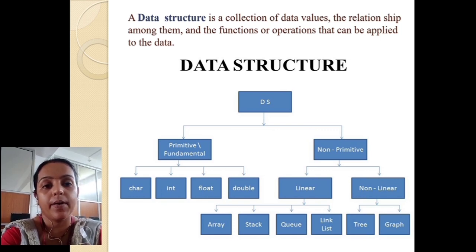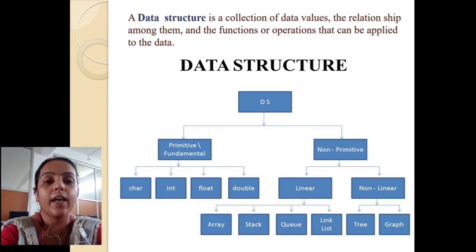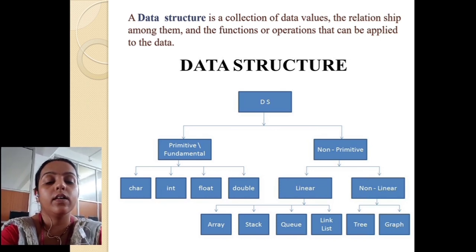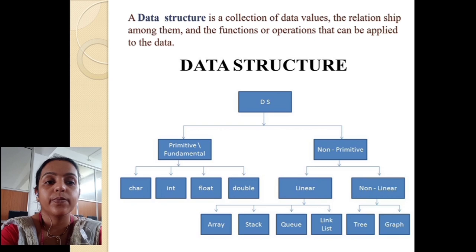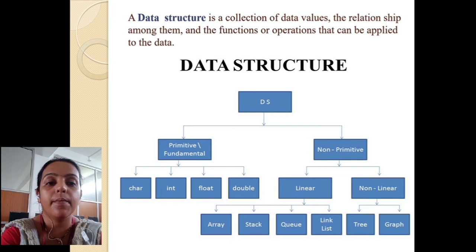Character is used for string values — string values means alphabets, like words. For example, the word 'structure' is one kind of word, and for that type we use the character data type. Second is integer, where we have numeric values with no floating point, like 1.2 or 1.3. For floating point values we use float. And double is used when we need a maximum size compared to the integer data type — double can hold both floating and normal integer values.